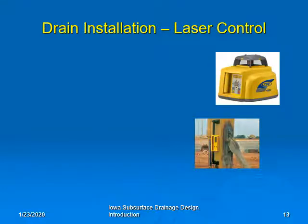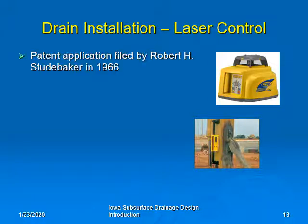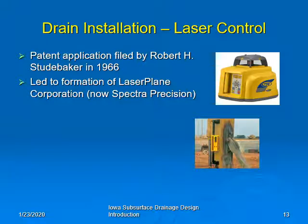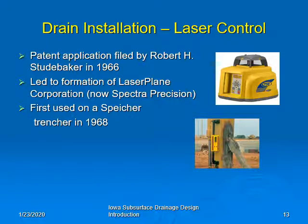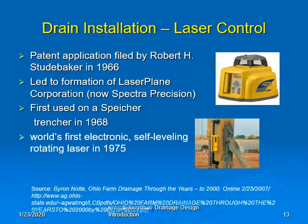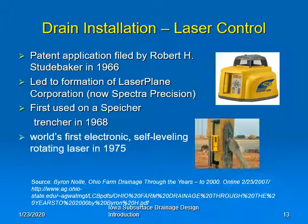Development of the laser level occurred in the 1960s as well. Robert Studebaker filed a patent application for the laser level in 1966 and formed the Laser Plane Corporation, which is now Spectre Precision. The laser plane was first used on a spiker trencher in 1968, and in 1975 the world's first electronic self-leveling rotating laser was built.